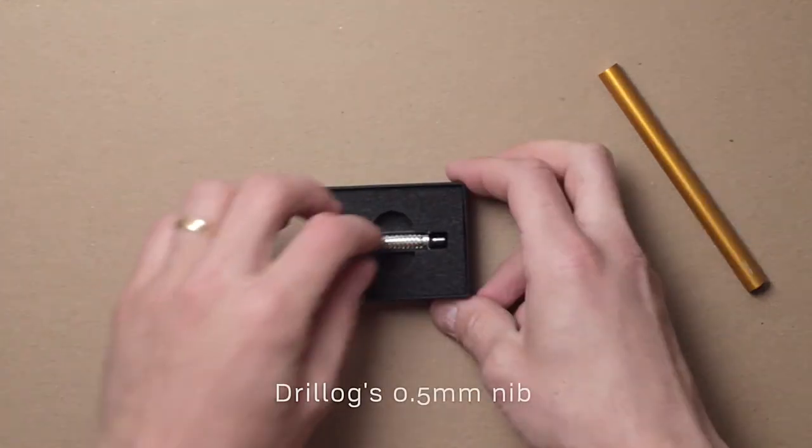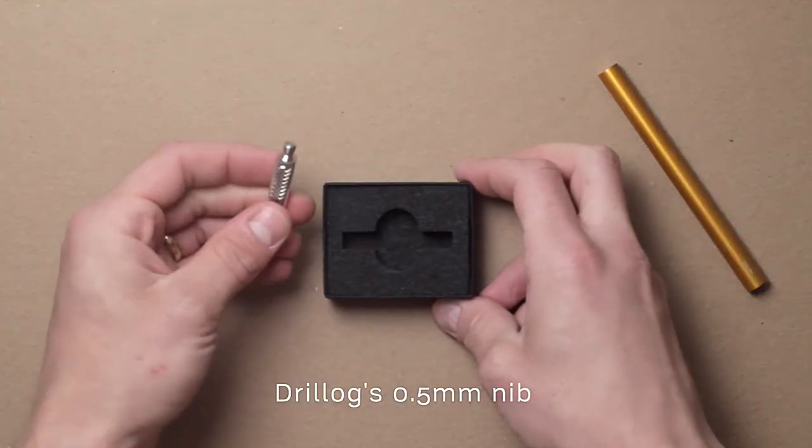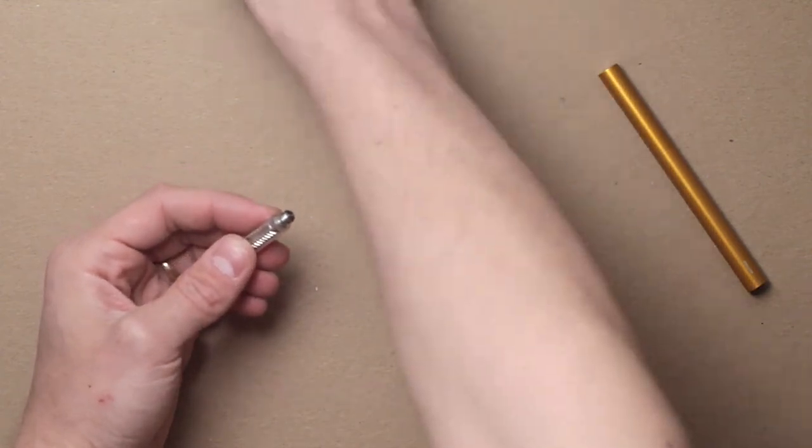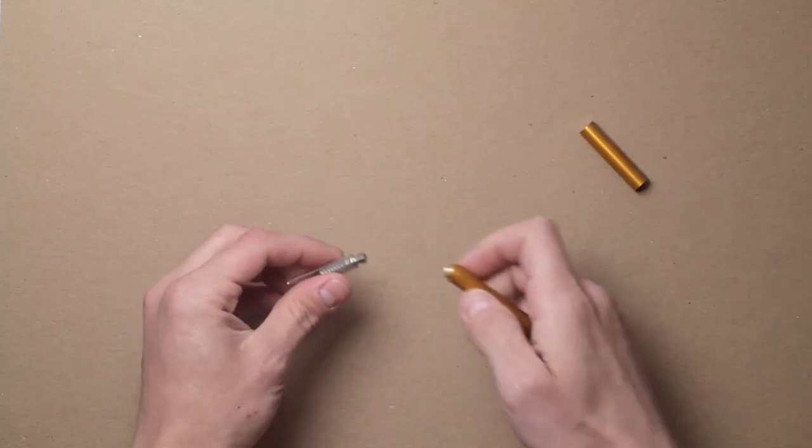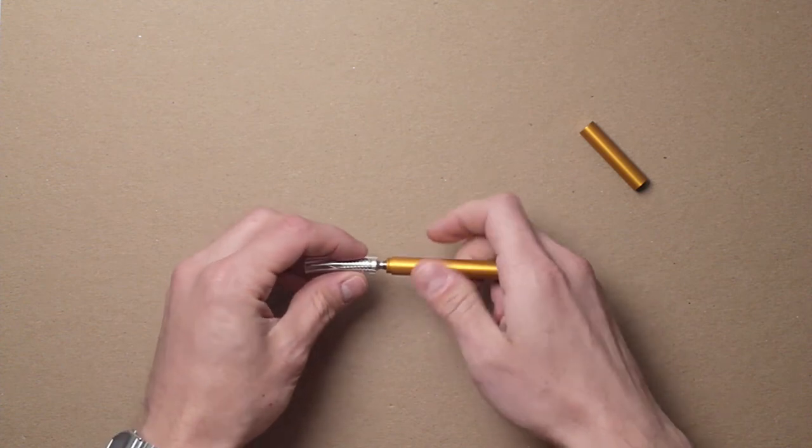I was provided with a 0.5 millimeter nib and their classic aluminum pen barrel. As you'll see here, the classic aluminum pen barrel is rather short, and my hands are on the larger side.